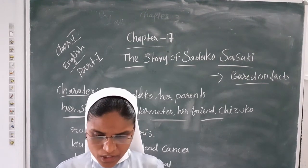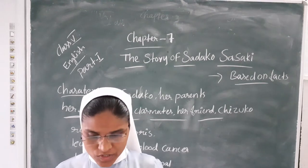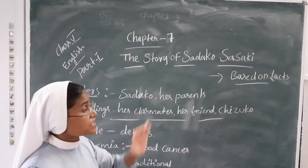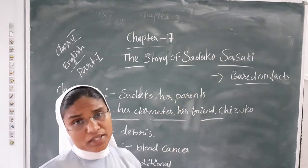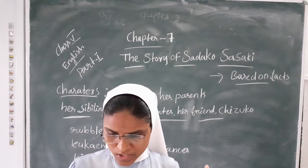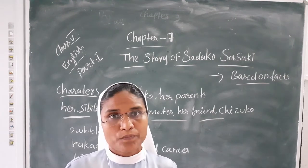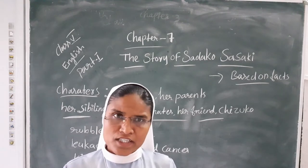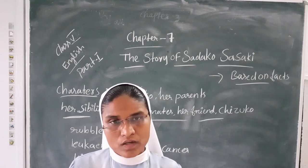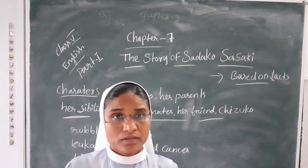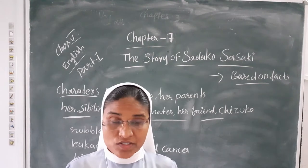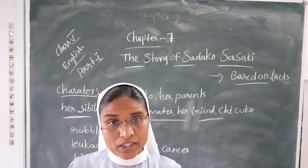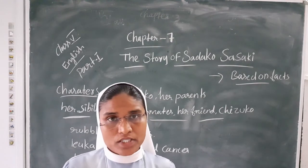After the war, a sister and brother were added to the family. Sadako was a fast runner and participated in school relay races. She is intelligent and a studious girl. She helps her mother, takes care of her brothers and sister, and she also has a grandmother at home. Her father is in the army.